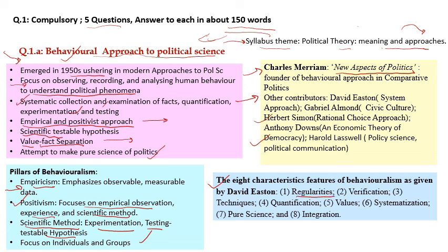David Easton gave eight characteristics of behavioralism: regularity — a theory should give the same result wherever applied; verification — scientific verification must occur; a particular quantified technique must be used; value-fact separation; a systematic approach; pure science; and integration — a multi-disciplinary approach integrating multiple disciplines and stages. So these were the eight characteristics of behavioralism.